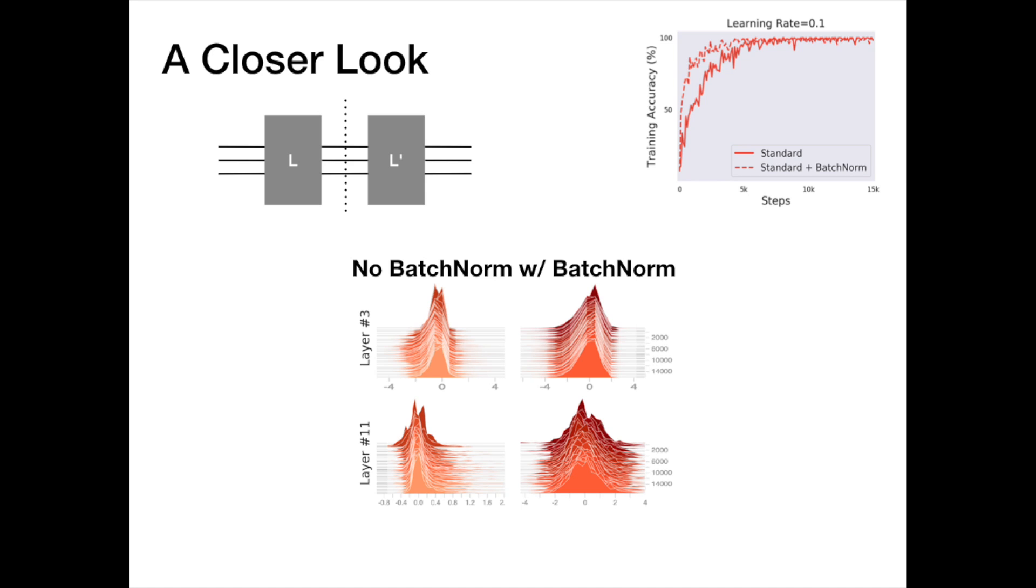And it's not just eyeballing. In our paper, we measure the change in gradient caused by concurrently updating previous layers. And even then, normalized networks show no reduction in this notion of covariate shift.